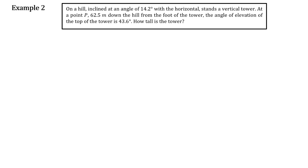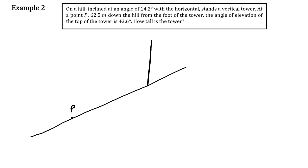To solve this, we need to illustrate. We have a hill and a tower. There's a point P somewhere on the hill, and then there is a vertical tower. From point P, there is an angle of elevation looking at the top of the tower.